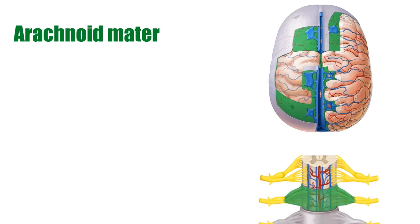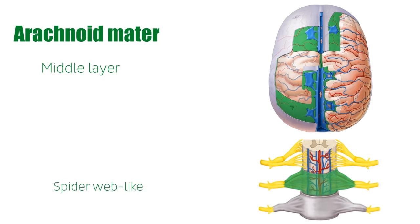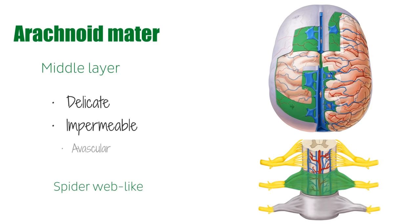The arachnoid mater is the middle layer of the meninges, inferior to the dura mater but superior to the pia mater. The term arachnoid is a reference to the spiderweb-like appearance of the arachnoid mater fibers where they attach to the underlying pia mater. The arachnoid mater is a delicate, impermeable, avascular membrane reinforced by the inner meningeal layer of the dura mater. Highlighted in green in the images, it covers the brain and spinal cord and contributes to the circulation of cerebrospinal fluid throughout the central nervous system.